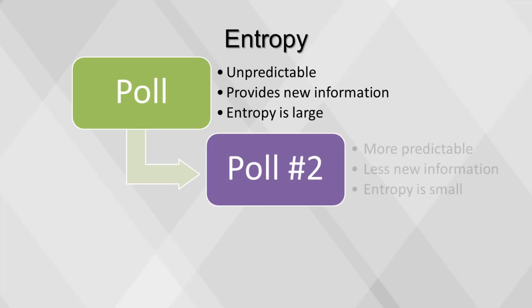Now let's say a second poll is performed shortly after the first poll. Since the result of the first poll is already known, the outcome of the second poll can be predicted well, and the results should not contain much new information. In this case, the entropy of the second poll result is small relative to the first.